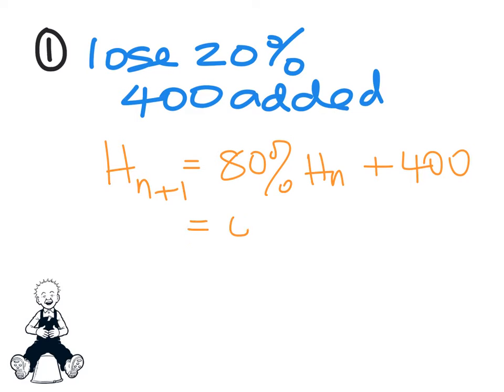If you turn that 80% into a decimal, then you end up with a recurrence relation which says H_n+1 equals 0.8 of H_n add 400.